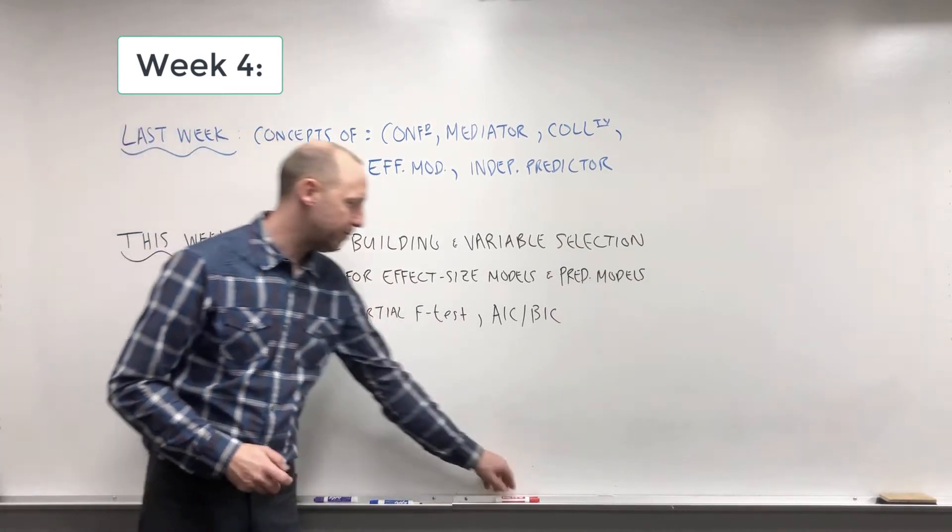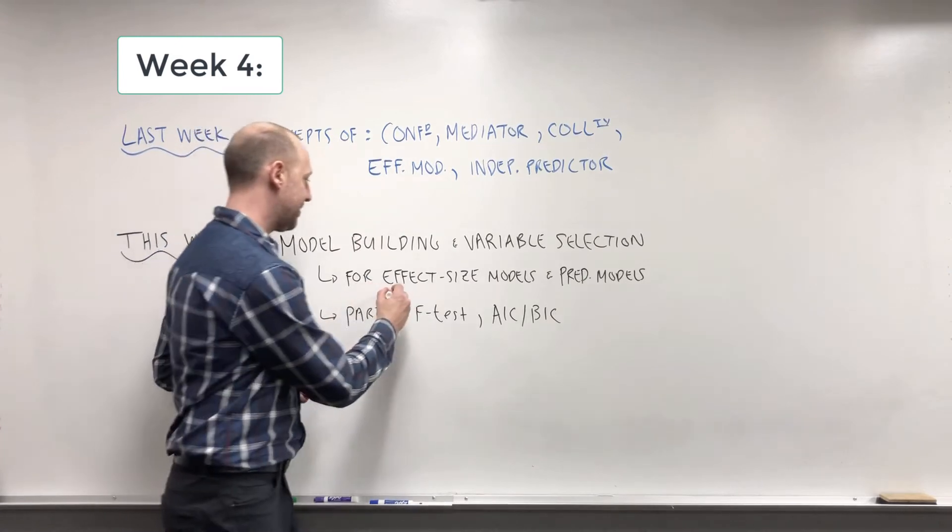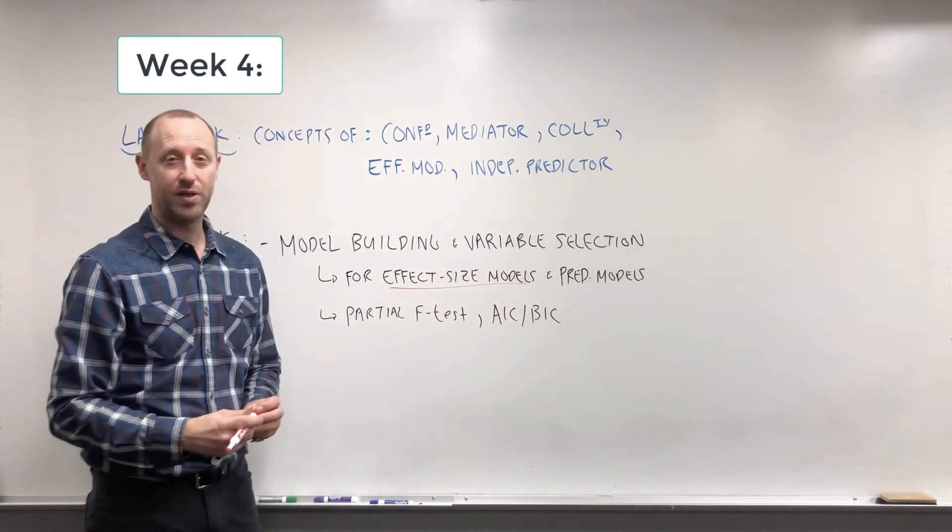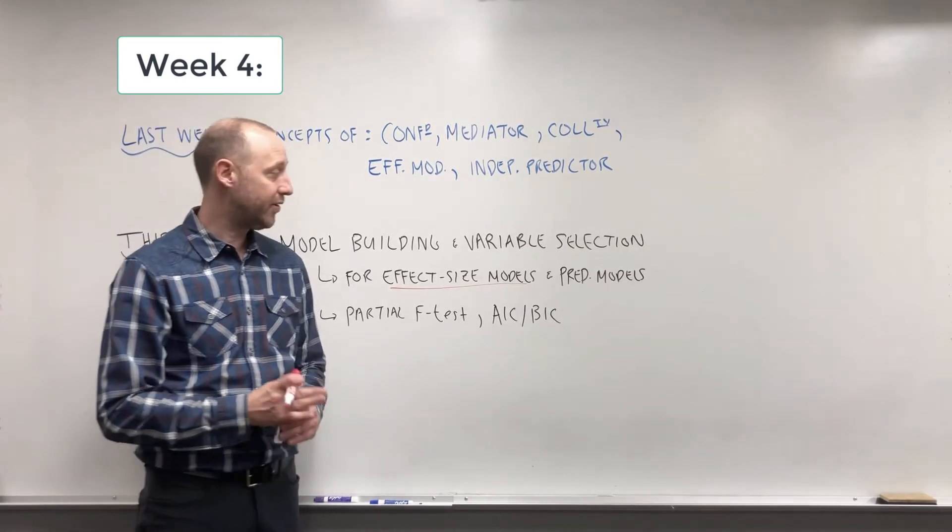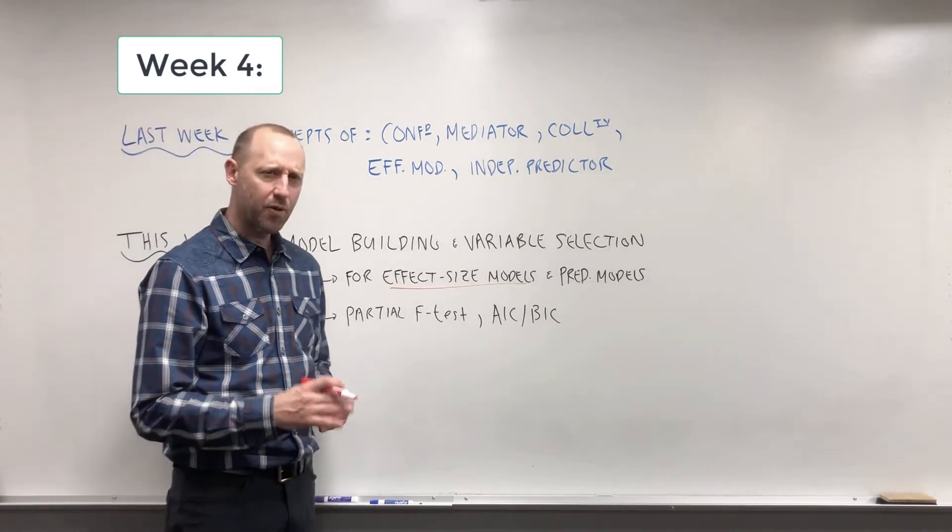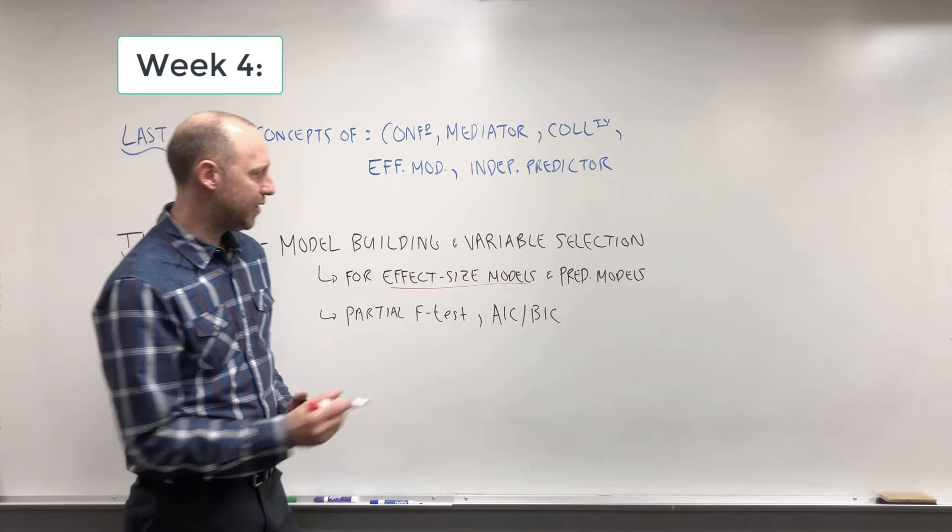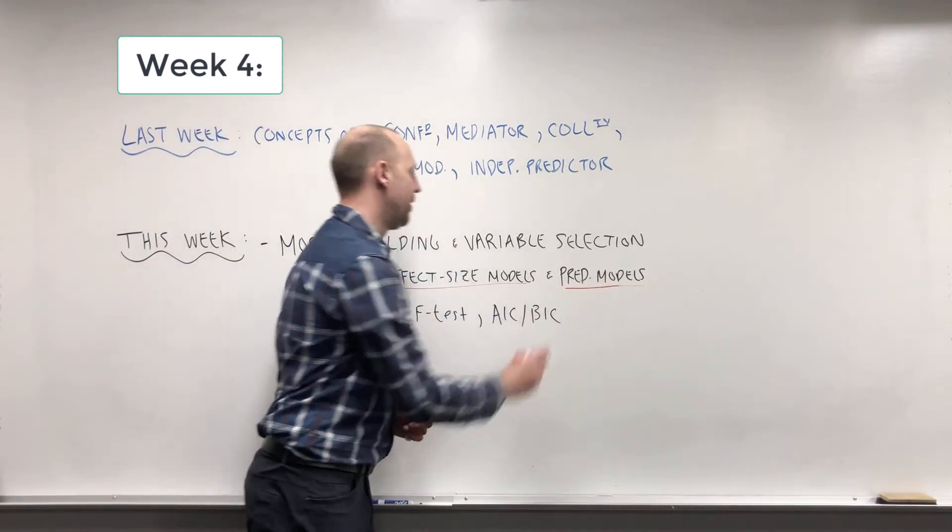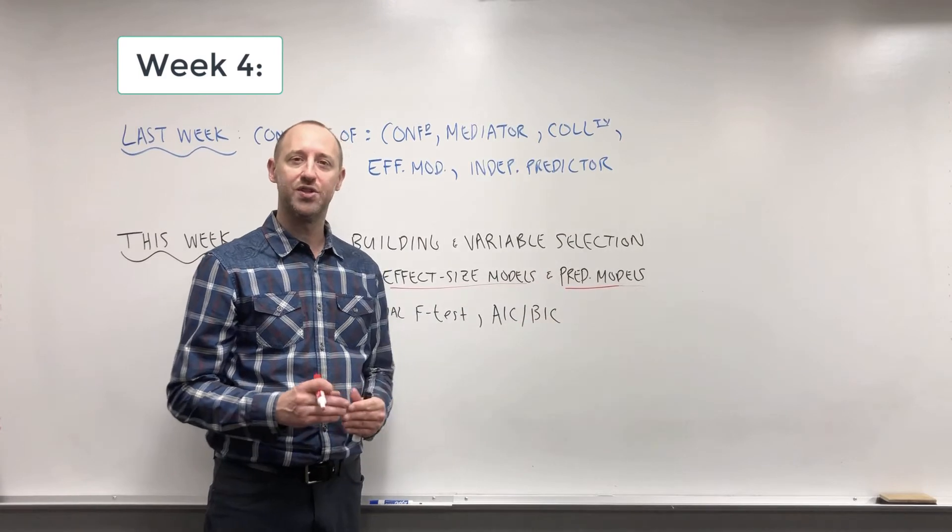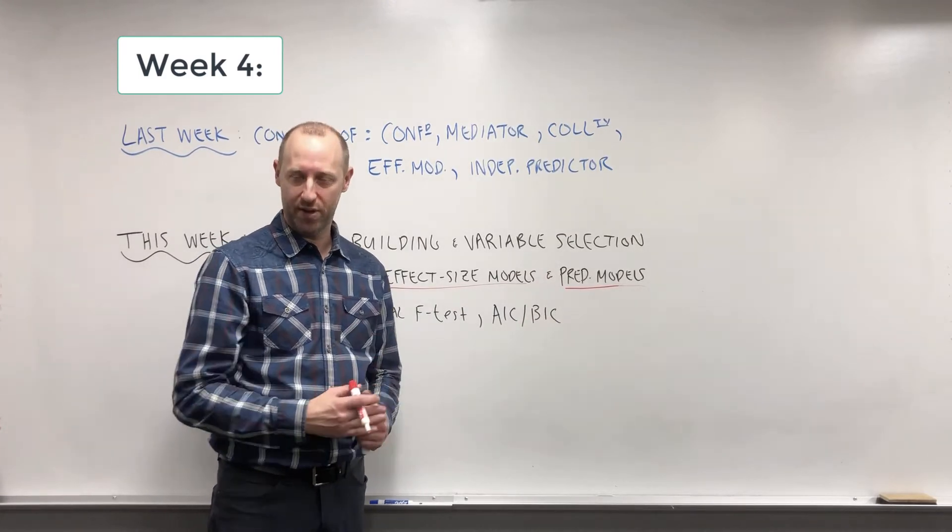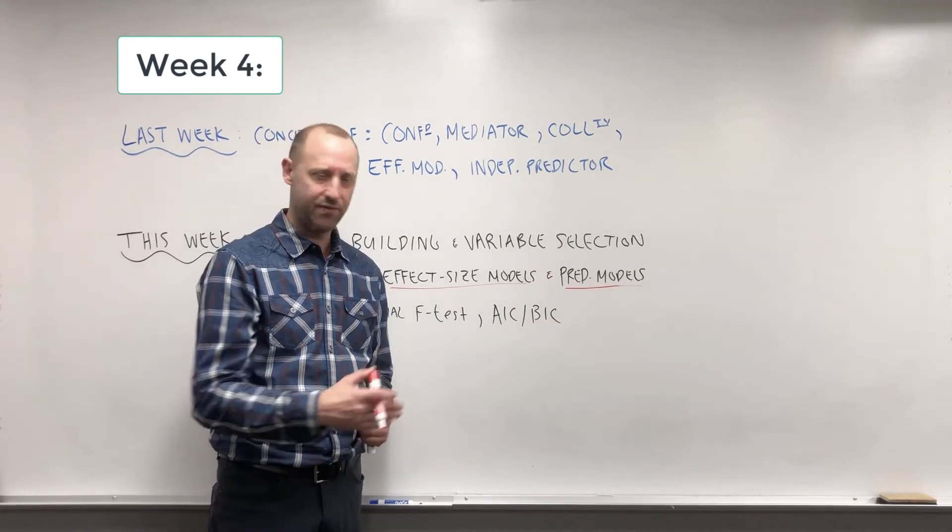We're going to separate it. We're going to do it both for effect size models, which is a lot of what we've been talking about in the course—if we want to estimate the effect of some variable x1 on an outcome. And we're also going to take a little bit of time to talk about model building and variable selection if we want to build a predictive model, where our goal is just to get a good estimate of the outcome rather than estimate the effect of some variable on an outcome.